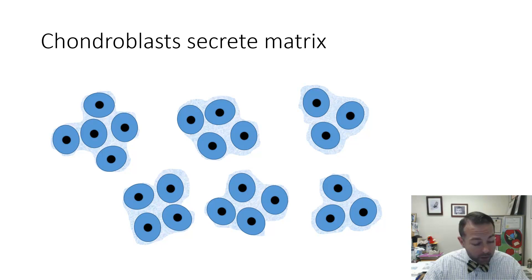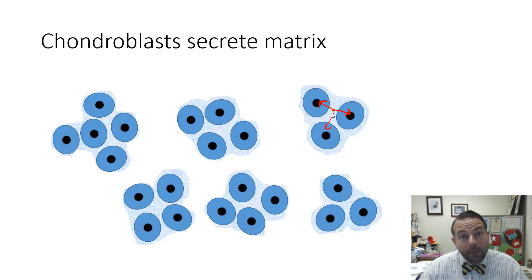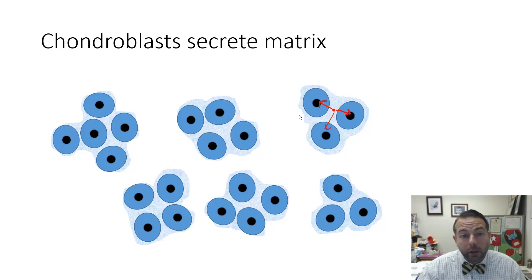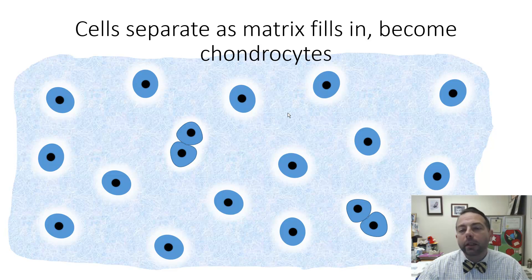As these chondroblasts continue to secrete this extracellular matrix, the buildup of matrix in between the cells is going to push the cells apart. So as the cells produce matrix and the space between them fills up with matrix, the cells are going to be kind of pushed apart. What we end up with then is mature cartilage cells, or chondrocytes, completely surrounded by matrix.